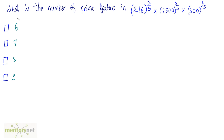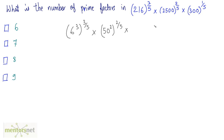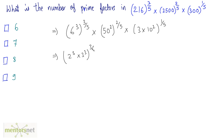Now for the final question: what is the number of prime factors in this expression? Let us express all of these numbers as a product of their prime factors. I can write 216 as 6 cubed, so 6 cubed raised to 3 by 5, times 2500 which is 50 squared, so 50 squared raised to 2 by 5, times 300 which is 3 times 10 squared, so 3 times 10 squared raised to 1 by 5. Since 6 is 2 times 3, I can write 2 times 3 whole cube, so 2 cubed times 3 cubed raised to 3 by 5.